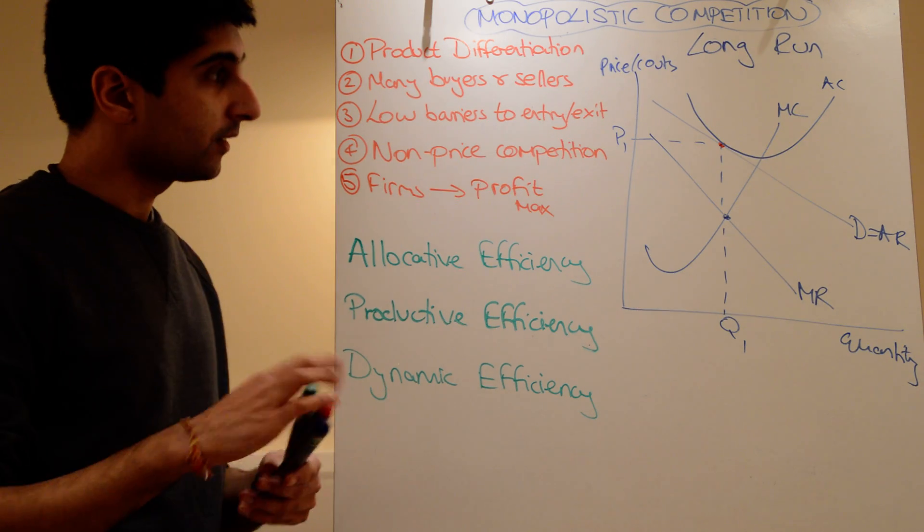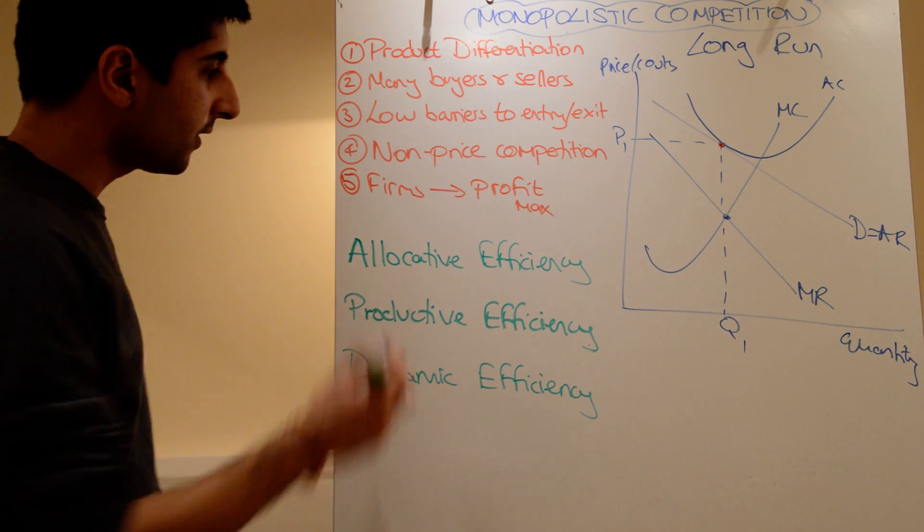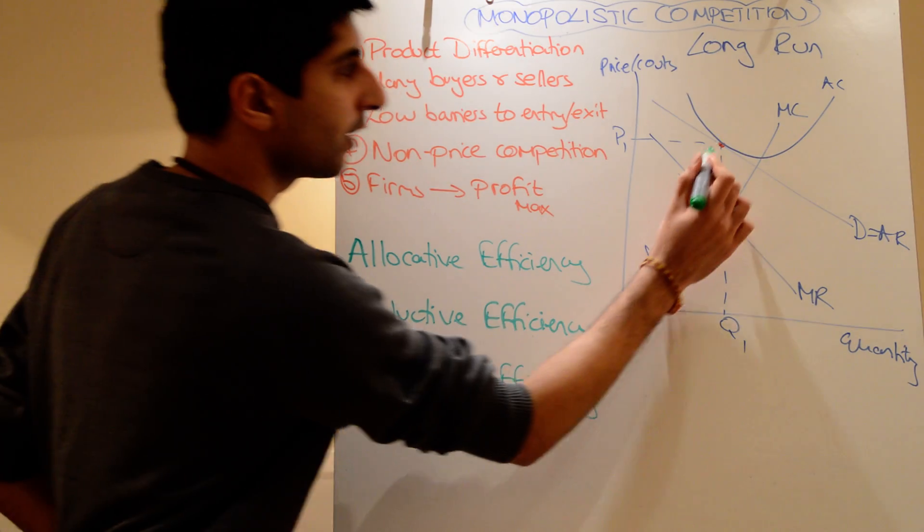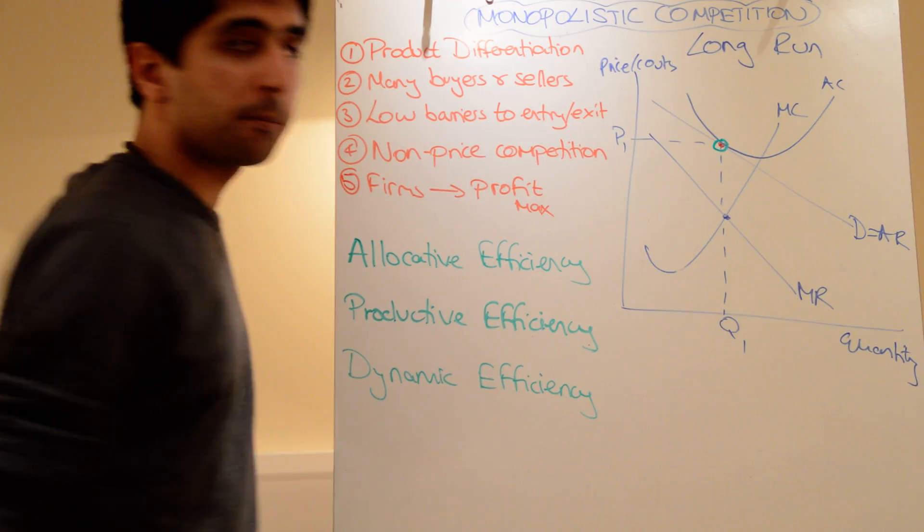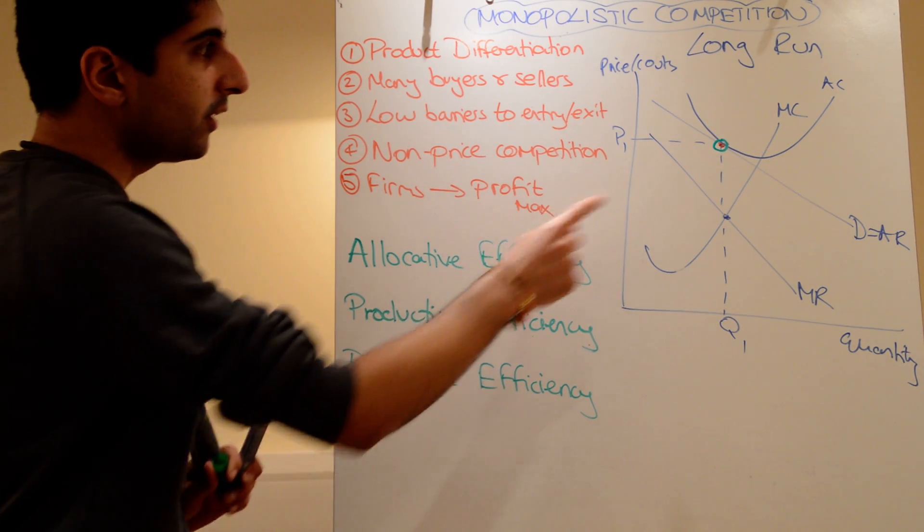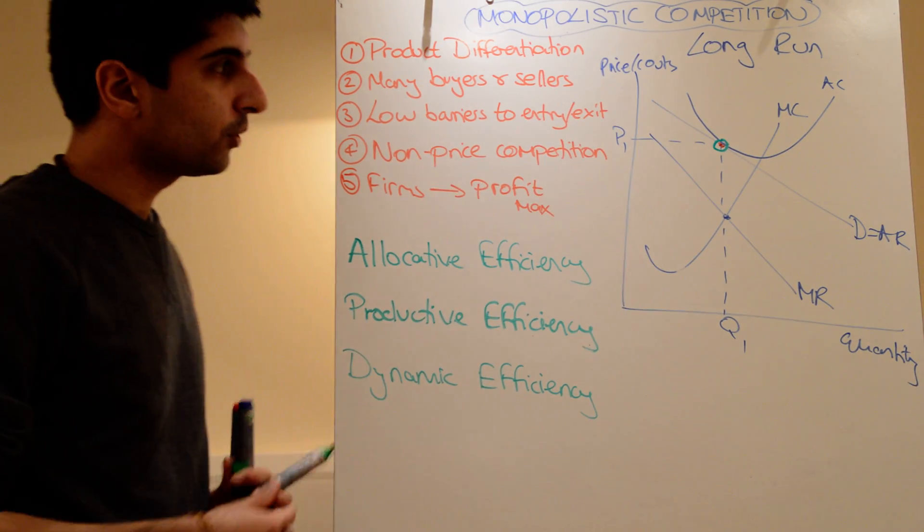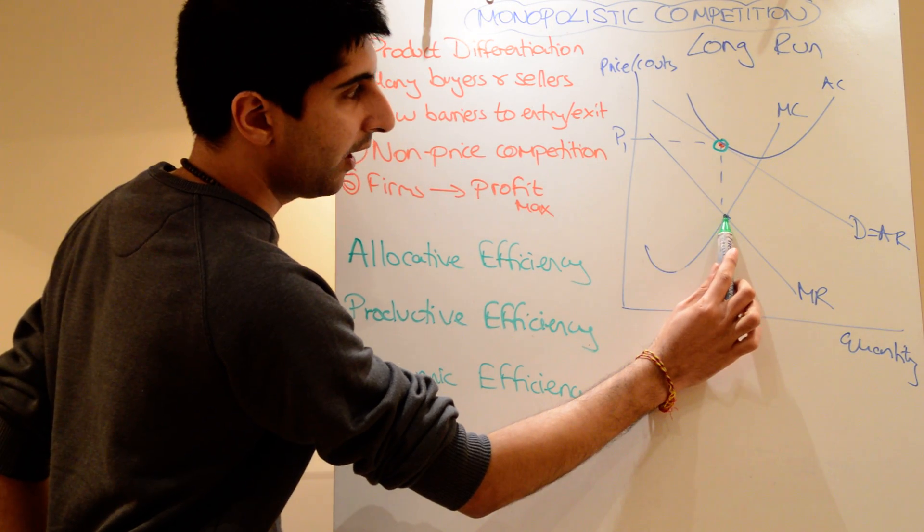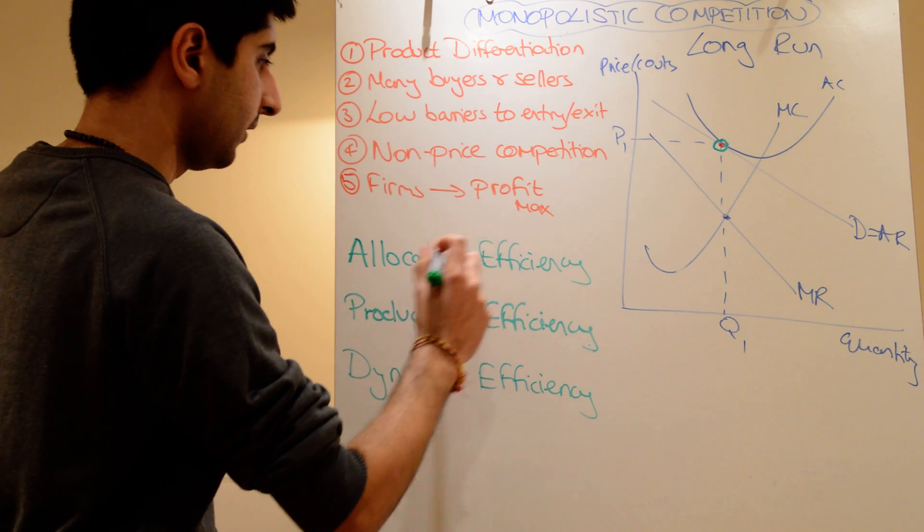And then we look at efficiencies. So is this efficient or not? Well, let's look at allocative efficiency. Remember our magic point, circling green? That's our magic point. That's what we're going to compare everything to, really. So at that point, is price equal to marginal cost? Well, there's the price, but at that level of production, marginal cost is way down there. So price is greater than MC.